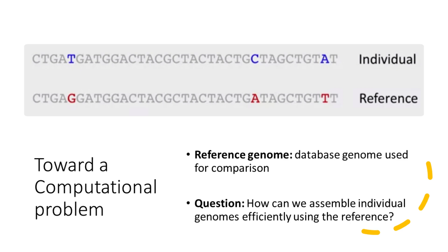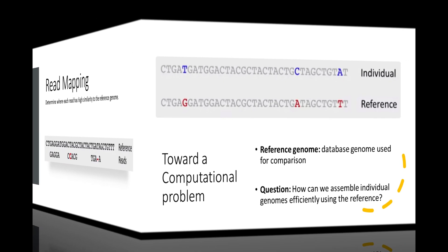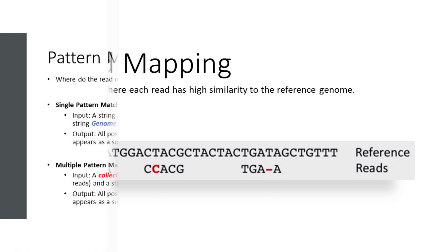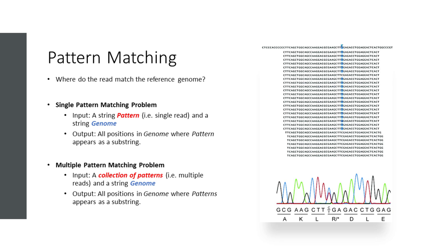Read mapping aims to determine where each read generated by the sequencing machine has high similarity to the reference genome. Unlike de novo sequencing, which assembles from scratch, read mapping algorithms take each of the sequencing reads and align them to the reference genome to identify any variation in the query sequence. For example, there is a perfect substring match here, a substitution here, and a deletion there.